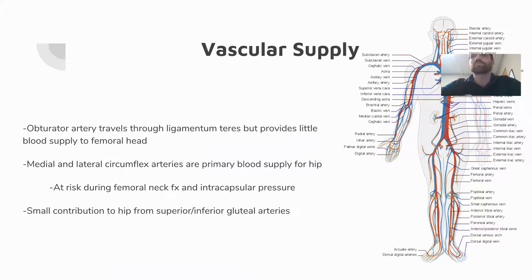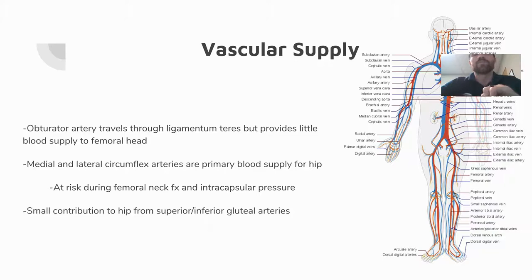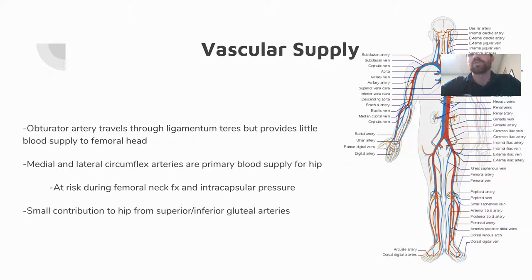The obturator artery travels through the ligamentum teres but is not essential for blood supply to the femoral head. Instead, the medial and lateral circumflex arteries are the primary source. They are at risk for injury during a femoral neck fracture and may present with significant intracapsular pressure — watch for patients with signs of fracture or an antalgic gait with their leg held in a loose-packed position.